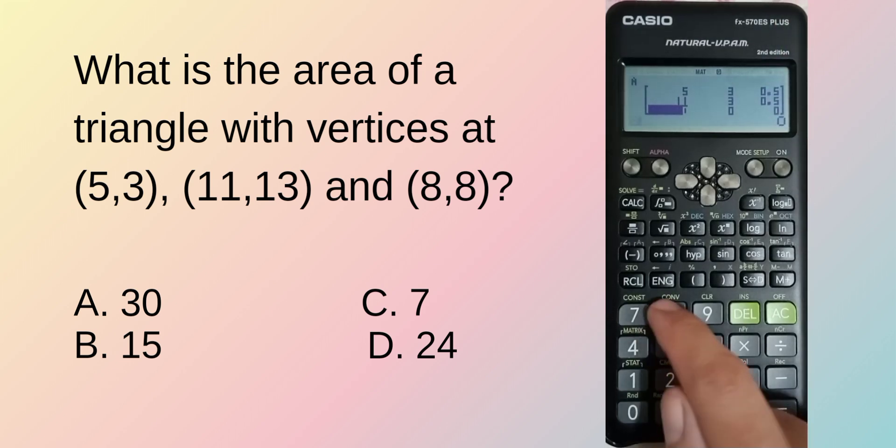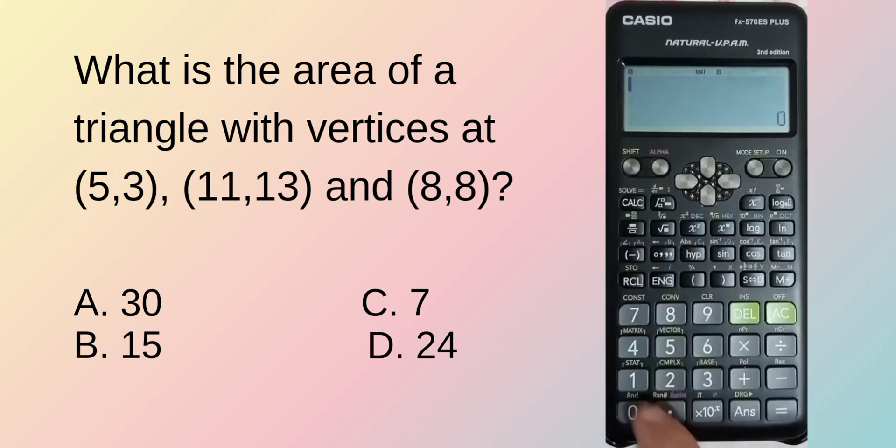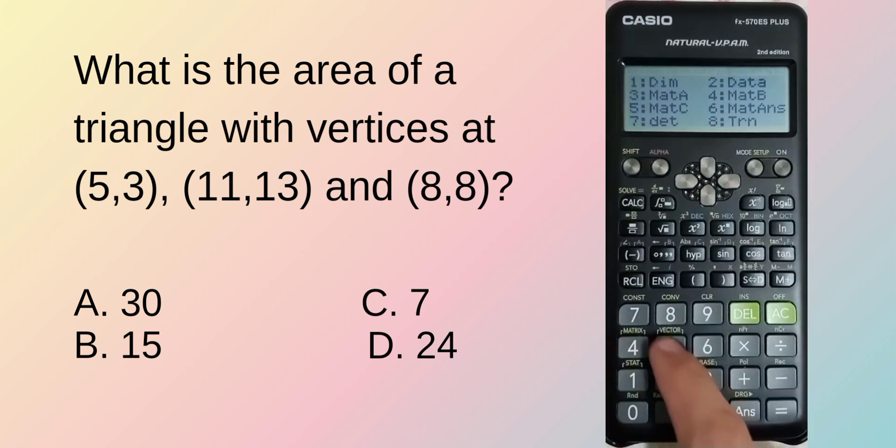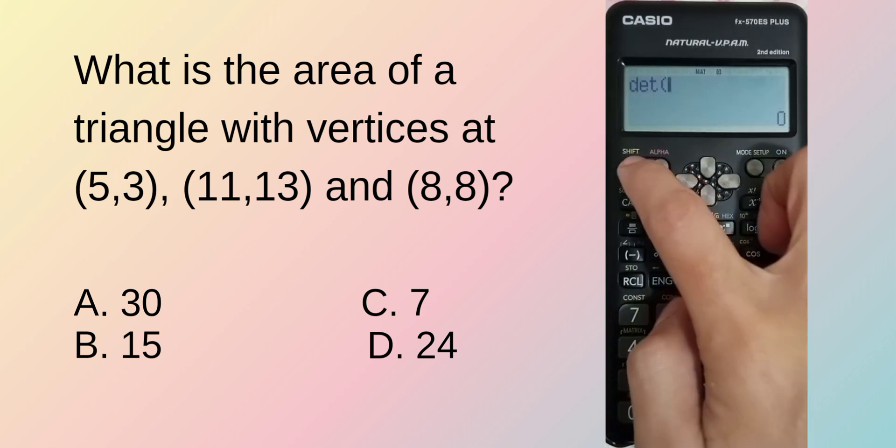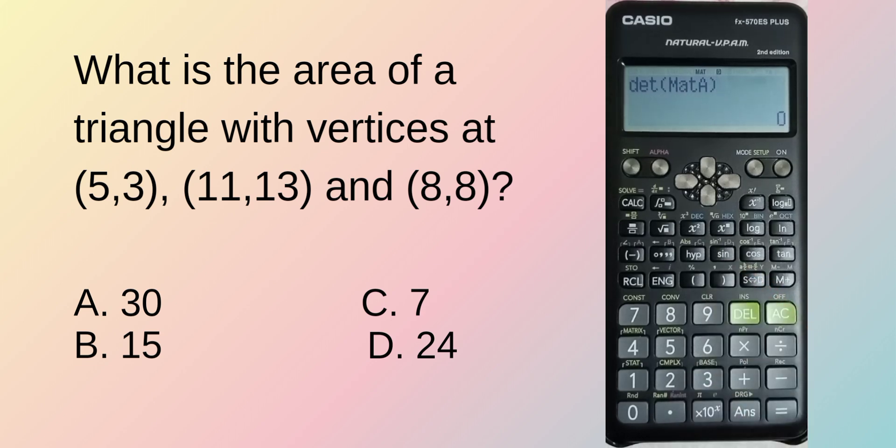And the last one is 8,8, 0.5. So, we have now our data. Then, shift, matrix, determinant. Then, shift, matrix. Right, matrix is what we did earlier. So, let's go back to matrix. So, remember when it's area, determinant. Because it's letter A, we used matrix A earlier. Automatic because it's first. Then, equal sign. There, 15. So, 15 is the answer.